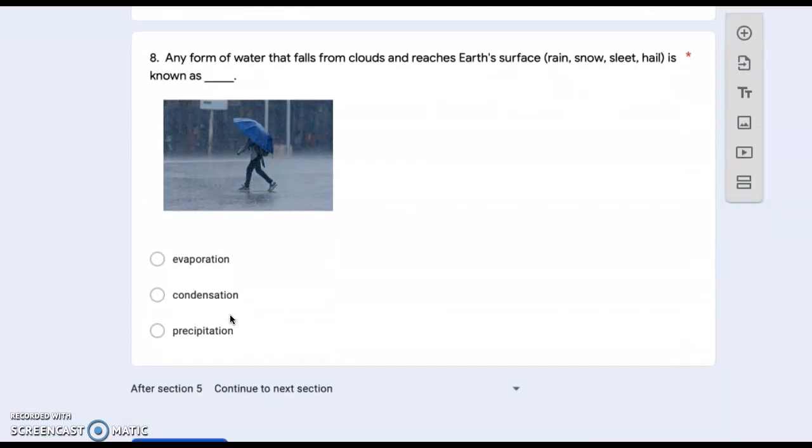Number eight: any form of water that falls from clouds and reaches Earth's surface—rain, snow, sleet, or hail—is known as evaporation, condensation, or precipitation?